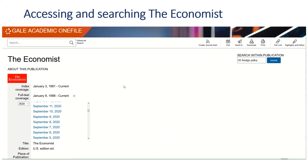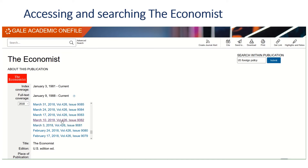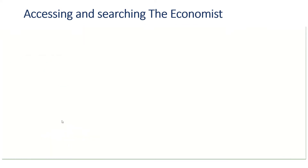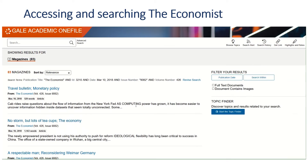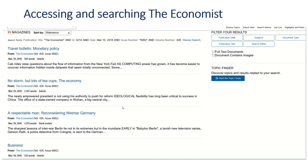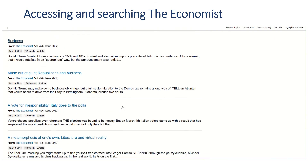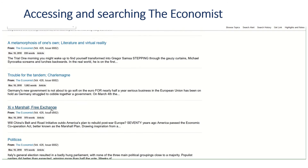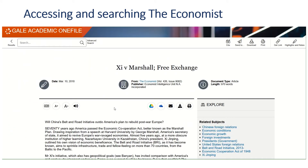If you know of a specific article that you're interested in and you know the date and the issue it was published in, you can drill down to it via the year and the date. So I'm interested in an article that appeared in the March 10th issue called Zai v. Marshall Free Exchange — and there it is. I can just open that up and I've got the full text there.